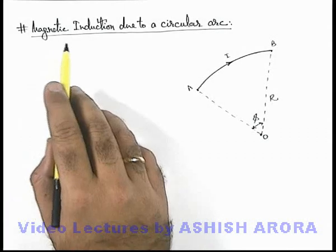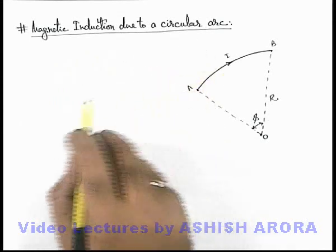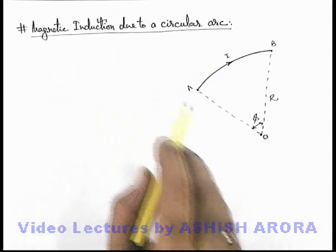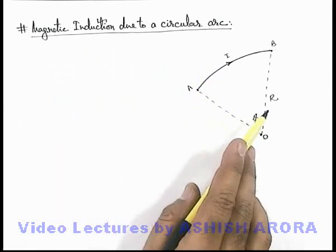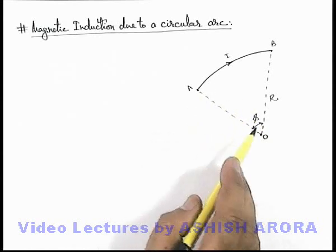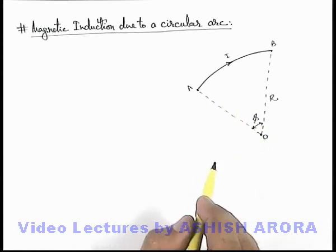Let's analyze the magnetic induction due to a circular arc carrying a current i. This picture shows the arc which is of radius r and subtending an angle phi at the center o.